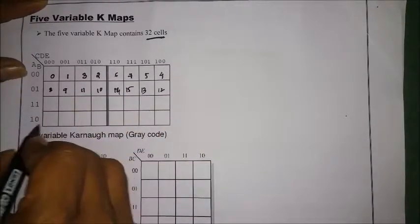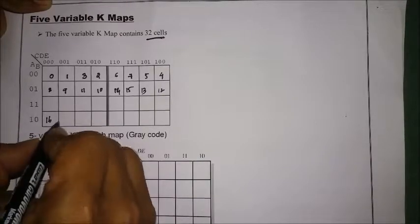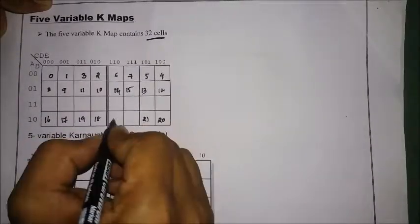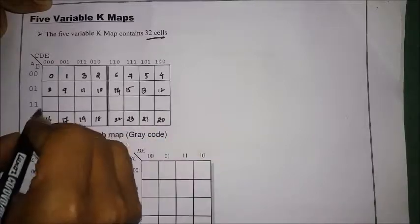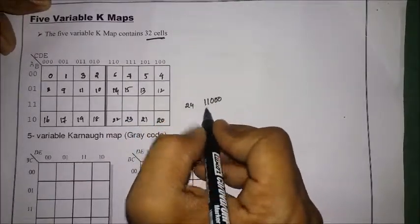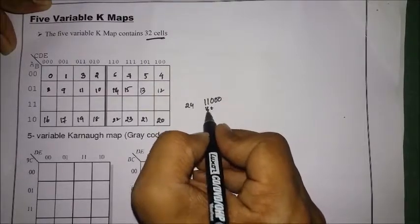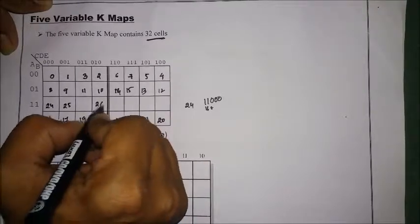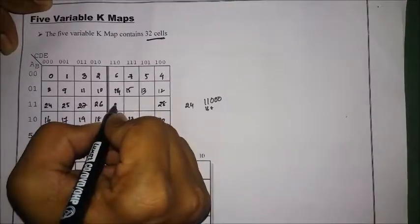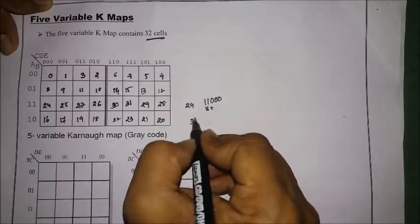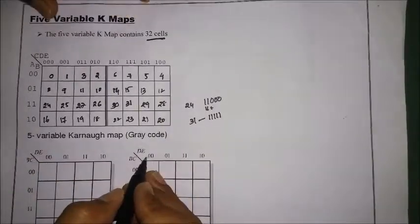Continuing the numbering: 16 is binary 10000, so 16, 17, 18, 19, 20, 21, 22, 23. Then 24 means binary 11000, which is 16 plus 8. So we have 24, 25, 26, 27, 28, 29, 30, and 31. Here 31 means binary 11111. This is how we give the numbering for a five-variable K-map.